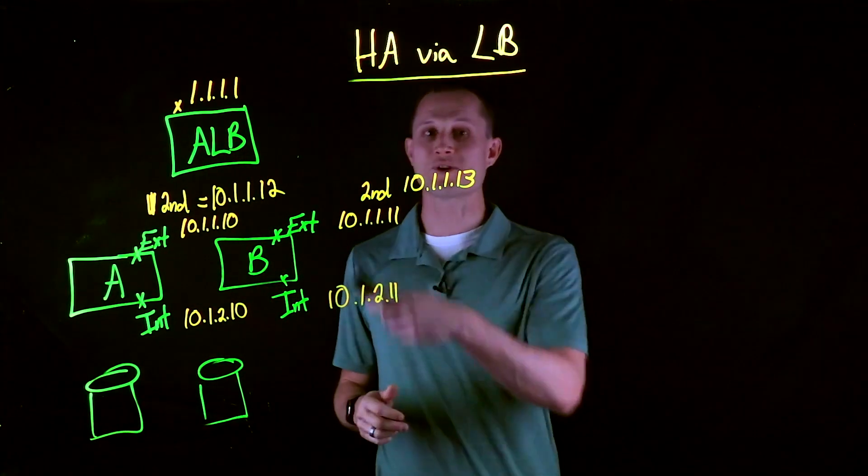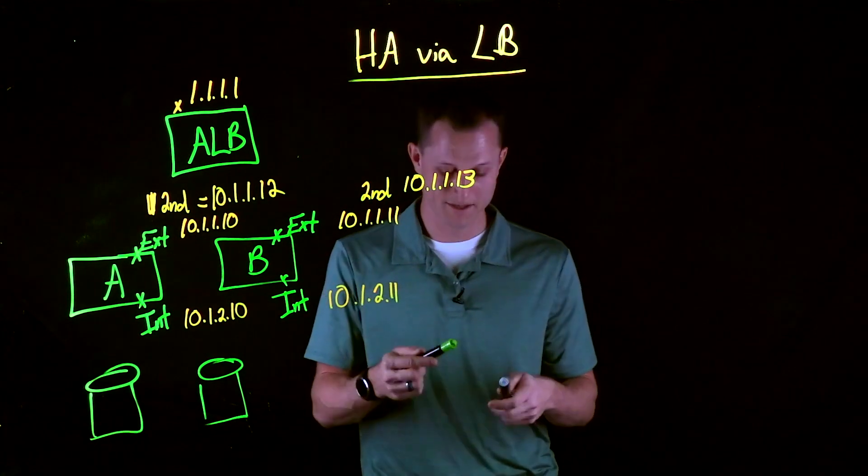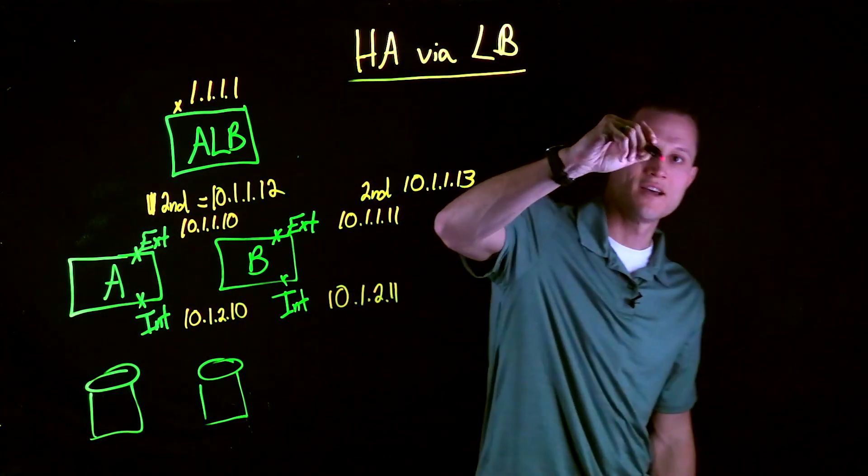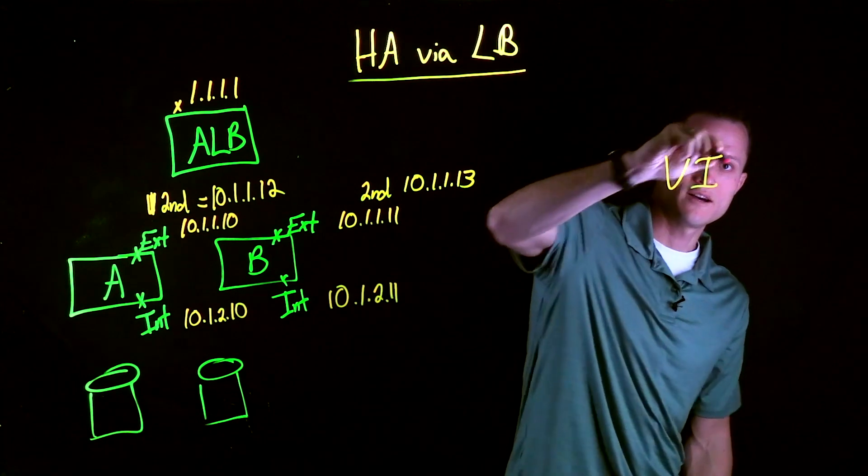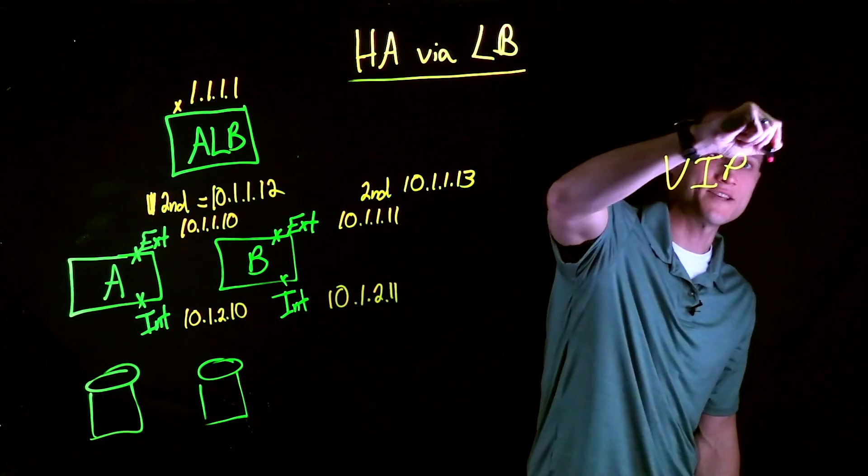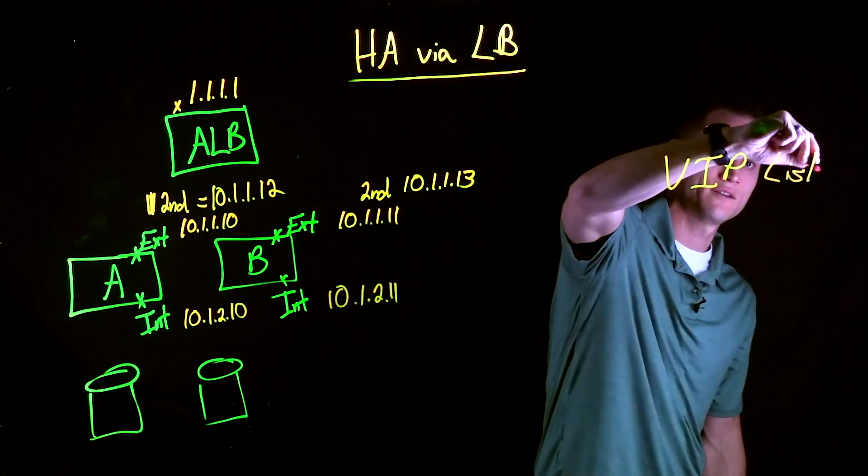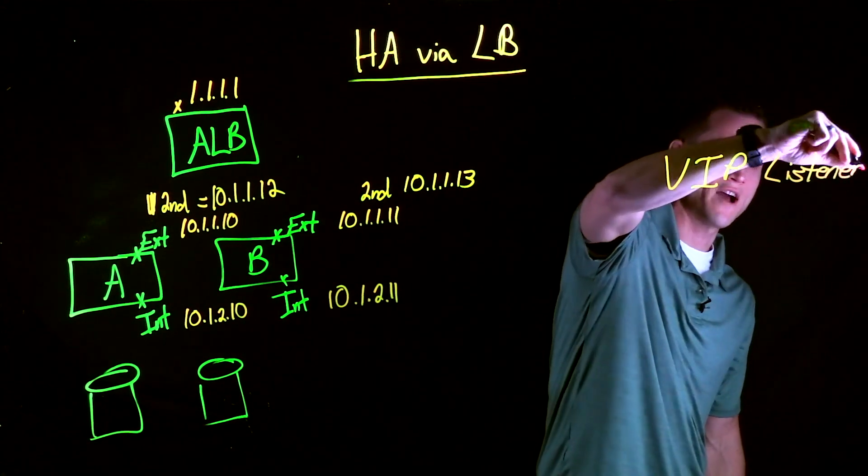Now what does this require on the F5 to make this work? We have a few different VIP configurations that allow us to pass traffic. And these are our listeners on the F5 config.